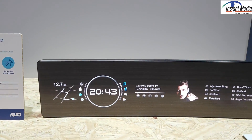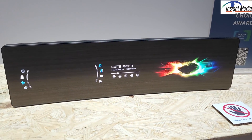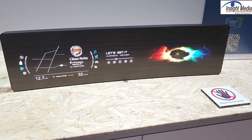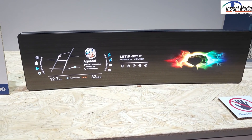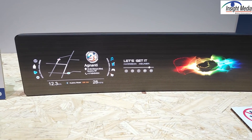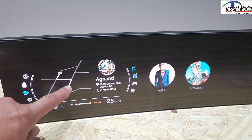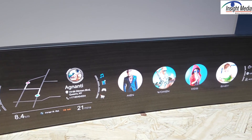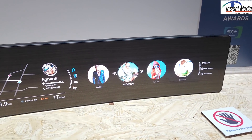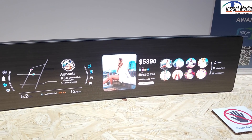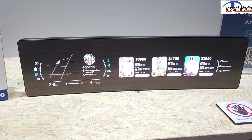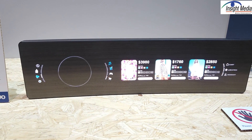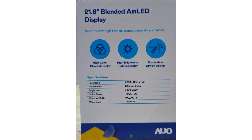Over here is a display designed to go into an automobile. This is a textured center console or passenger display. The idea is you have a wood grain look, and the display behind it can come on or off, giving a nice ambiance in the vehicle. What's nice about this one is the transmissivity is up around 80%, much higher than what some other companies are showing.